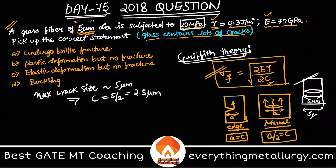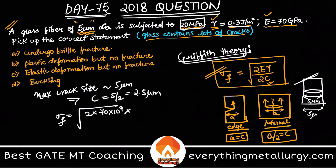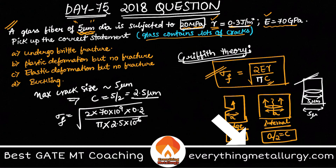Now let me calculate sigma_f. The formula is: sigma_f = sqrt(2Eγ / πc). Substituting E = 70×10⁹ Pa, γ = 0.3 J/m², and c = 2.5×10⁻⁶ m, you get approximately 73 MPa.